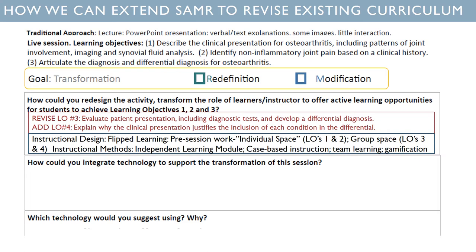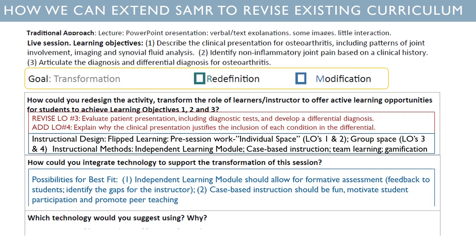How do we integrate technology to support the transformation of this session? For the independent learning module, we really want to make sure it includes formative assessment — there's a lot for students to learn here. We want to make sure they get feedback when they're learning on their own in that individual space. We also want to make sure the instructor can identify gaps in learning so they can plan to reserve a few minutes to address those gaps in the live session if needed. For case-based instruction, it really ought to be fun, it ought to motivate student participation, and we want to make sure we stay in that modification or redefinition mode of having students act as peer teachers.